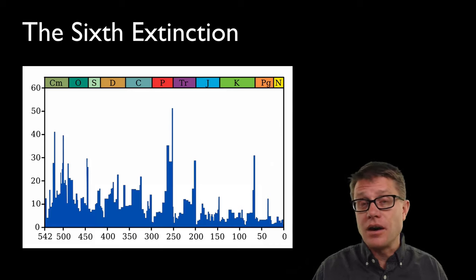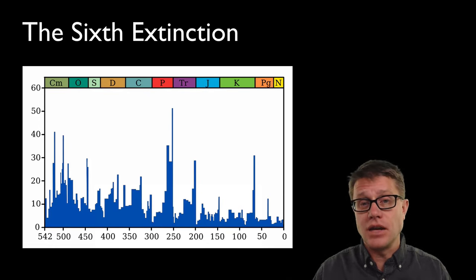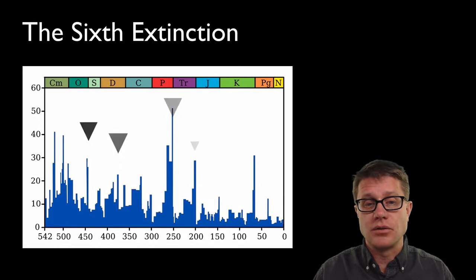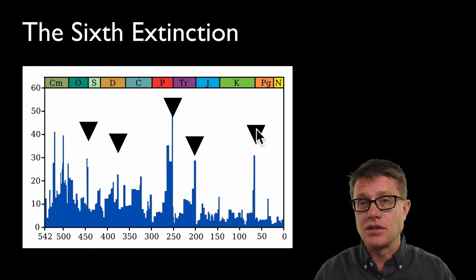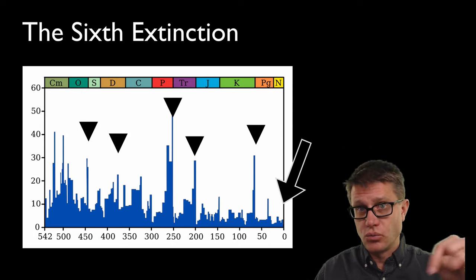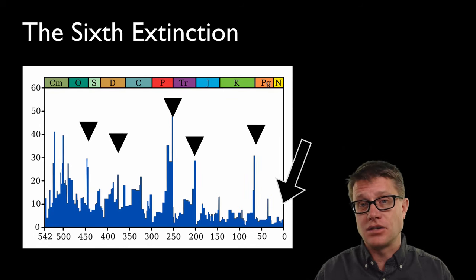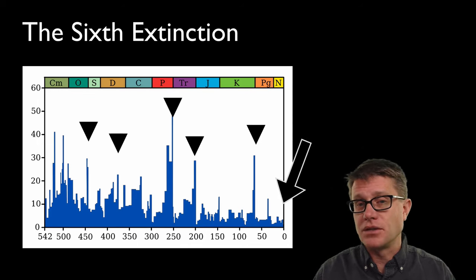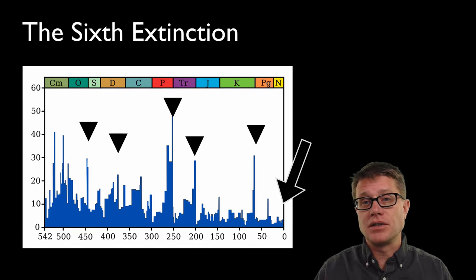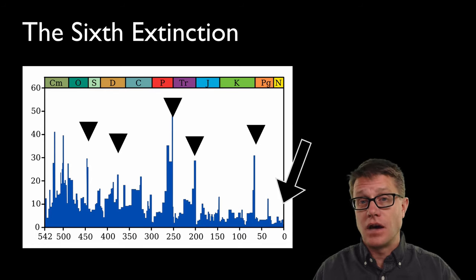Now this has been going on for a long period of time. Extinctions are a part of nature. If we look back through the fossil record, we have seen five major mass extinctions over time, and they have different causes. But most scientists are pointing to right now as the sixth mass extinction — a mass extinction caused by humans. We are seeing extinction rates and biodiversity loss that we have never seen before, and its cause is us.